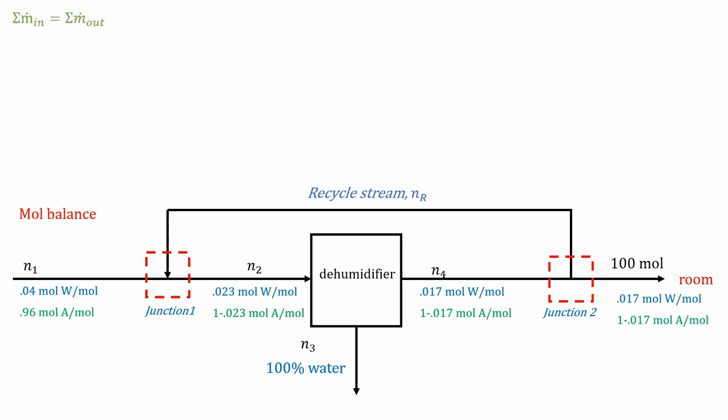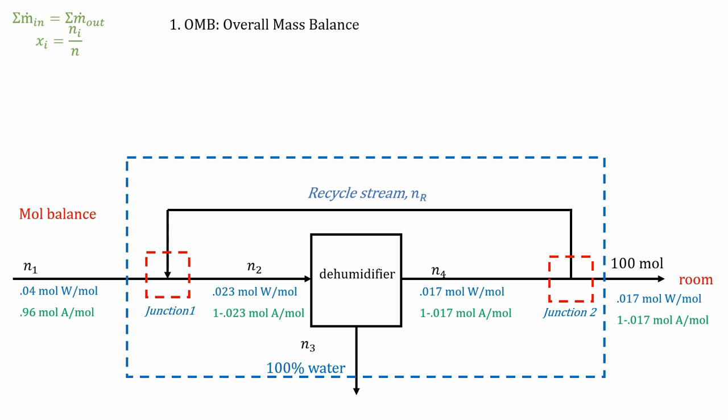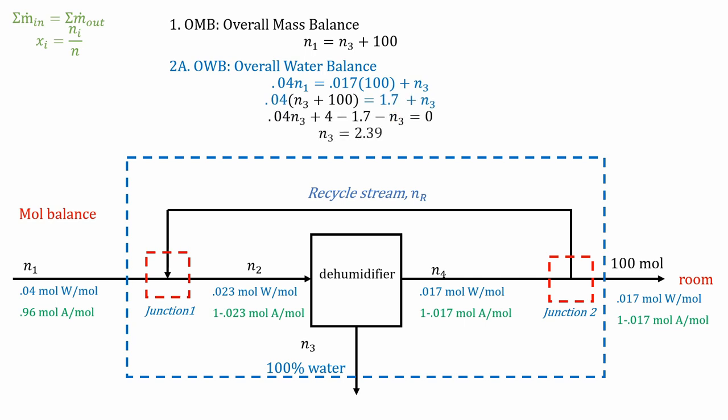So applying the mass balance, when in doubt, n equals out. And also don't forget the definition of mole fraction. So we're going to draw our system boundary for our overall mass balance. So what's coming in, set it equal to what's coming out. So we have n_1 equal to n_3 plus 100. And our overall water balance, same thing, but this time we use the definition of mole fraction. So we multiply these together. And now take a look at that. We have two equations, two unknowns. Filling out the rest is just algebra. And we can obtain n_3 for our equation.